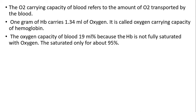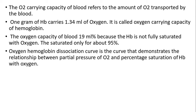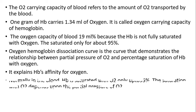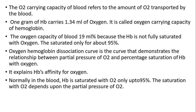it is saturated only about 95%. The oxyhemoglobin dissociation curve is the curve that demonstrates the relationship between partial pressure of oxygen and percentage of saturation of Hb with oxygen. It explains the hemoglobin's affinity for oxygen. Normally in the blood, the hemoglobin is saturated with oxygen only up to 95%.